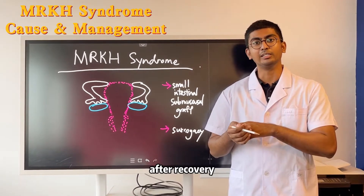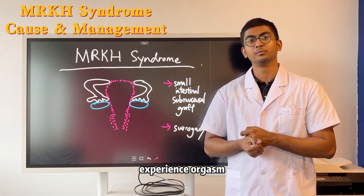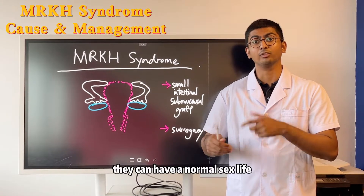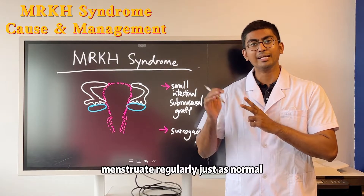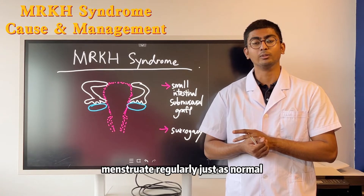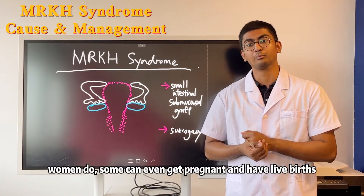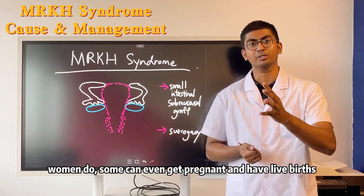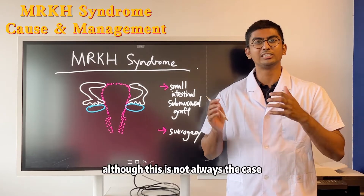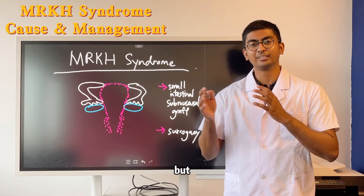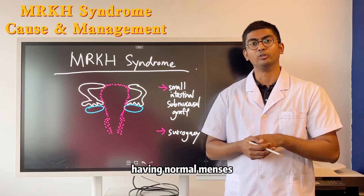After surgery and recovery, patients can experience orgasm during sexual intercourse, have a normal sex life, and menstruate regularly just as normal women do. Some patients even go on to get pregnant and have live births with full-term healthy pregnancies, although this is not always the case. We can definitely guarantee a normal sex life and regular menses.